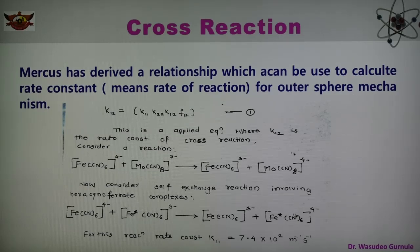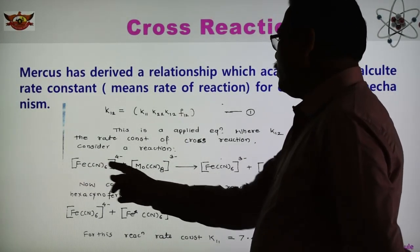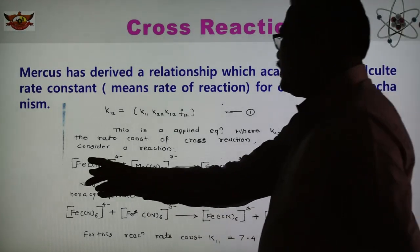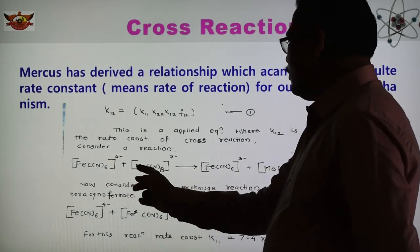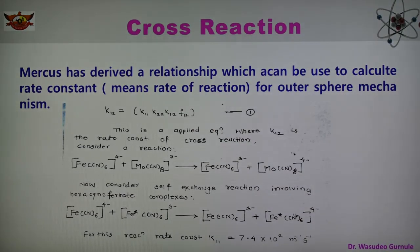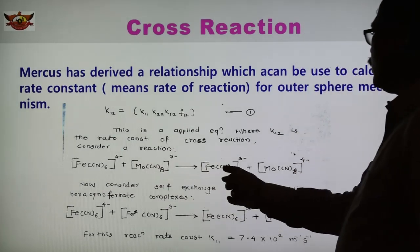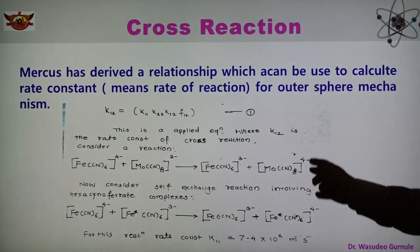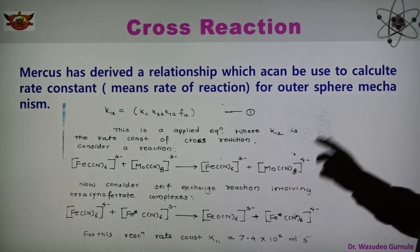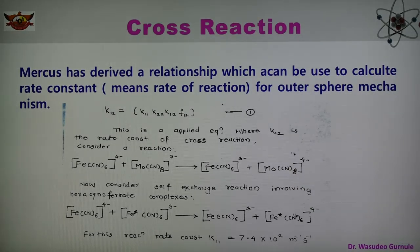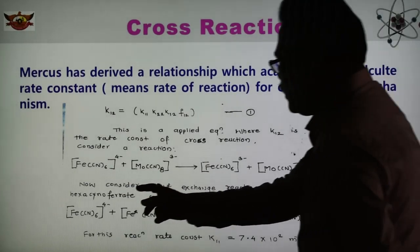Consider now the reaction between two complexes. Here is the Fe complex and here is the Molybdenum complex. So Fe(CN)6⁴⁻ reacts with Mo(CN)8³⁻. There is a transfer of electron — Fe loses an electron and Mo gains an electron — giving Fe(CN)6³⁻ and Mo(CN)8⁴⁻. These are the two metal complexes in which transfer of electron is taking place.